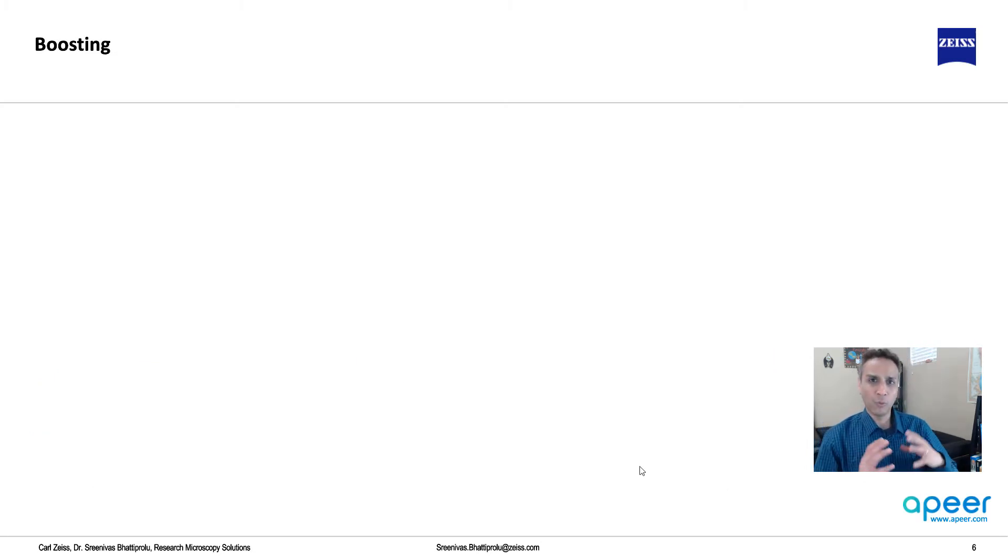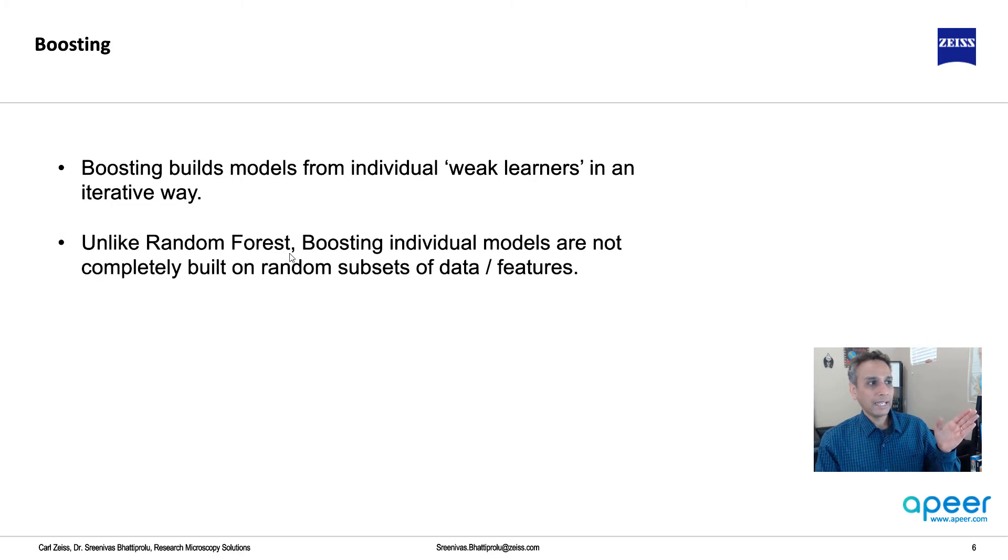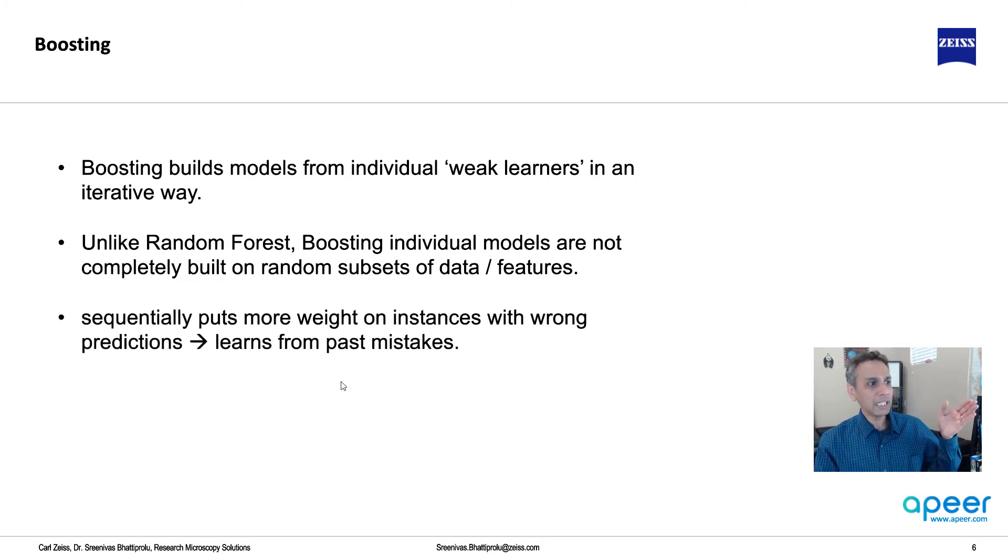Let's look at boosting. What is gradient boosting? It's very similar to random forest - it builds from individual weak learners in an iterative way. The difference is, unlike random forest, boosting individual models are not completely built on random subsets of data and features. It sequentially puts more weight on instances with wrong predictions. It learns from past mistakes. In the next tree, it builds such a way that it does better, fixing mistakes from the past.